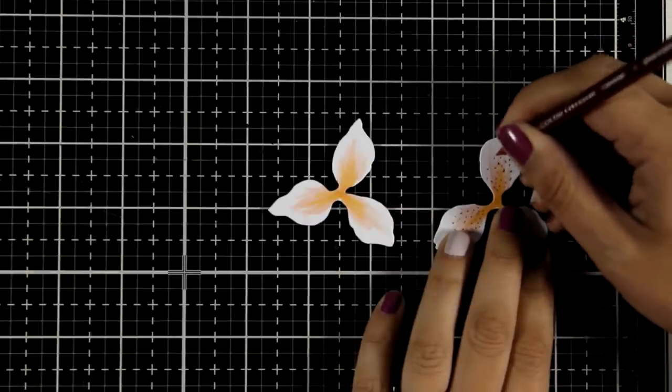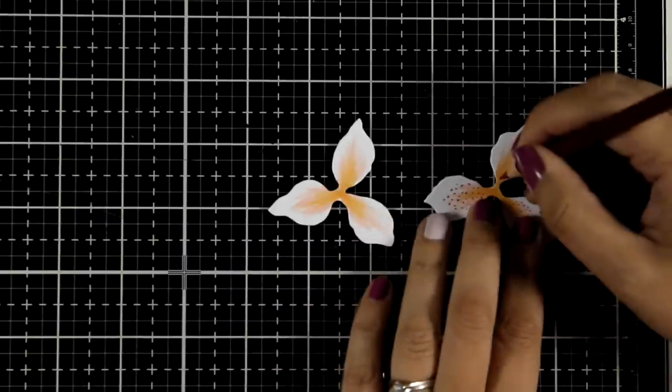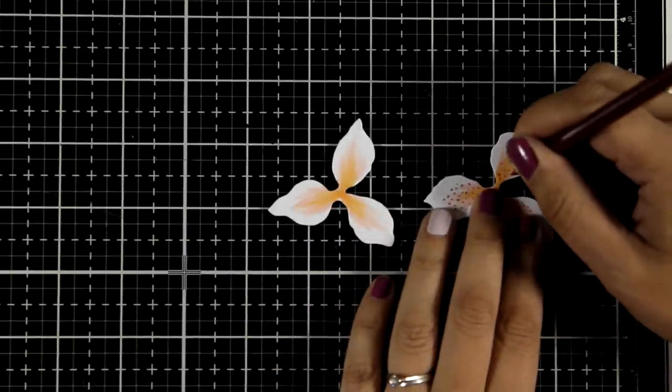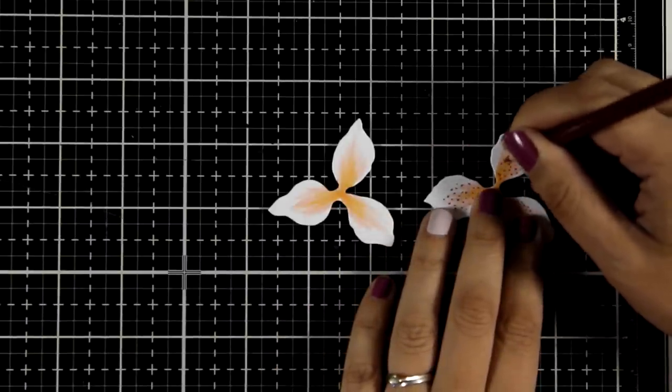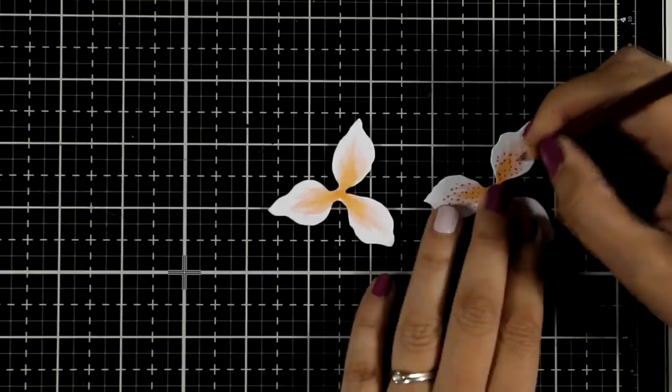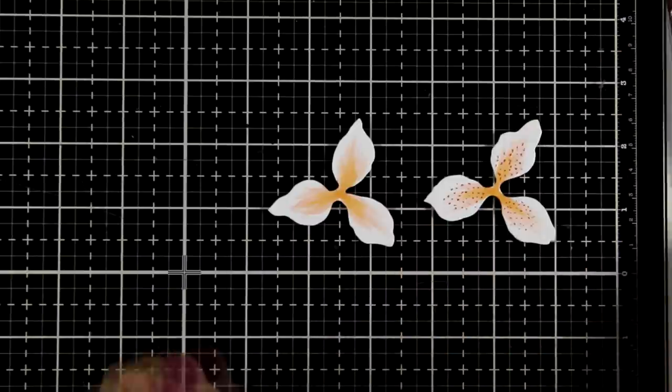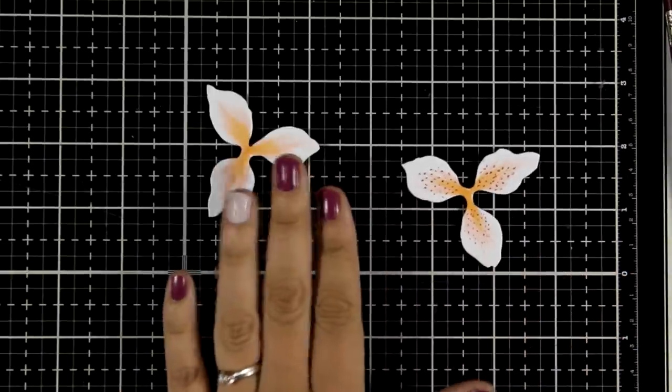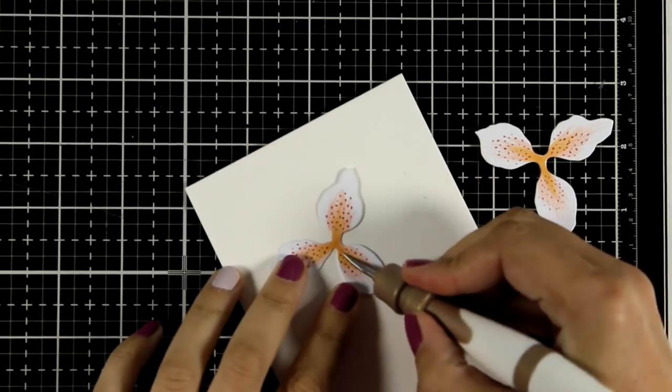If you want to know the exact name of the Prismacolor pencil that I'm using here is Crimson Lake, that's PC925, but it really doesn't matter. All you need is a dark red pencil. And I will repeat the same process on the other die cut.